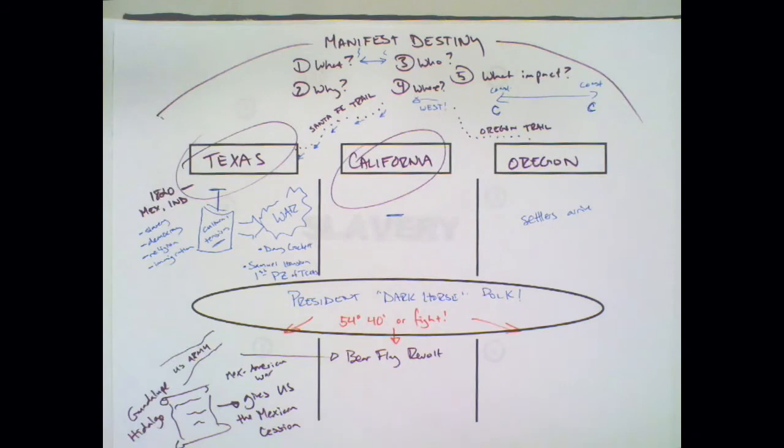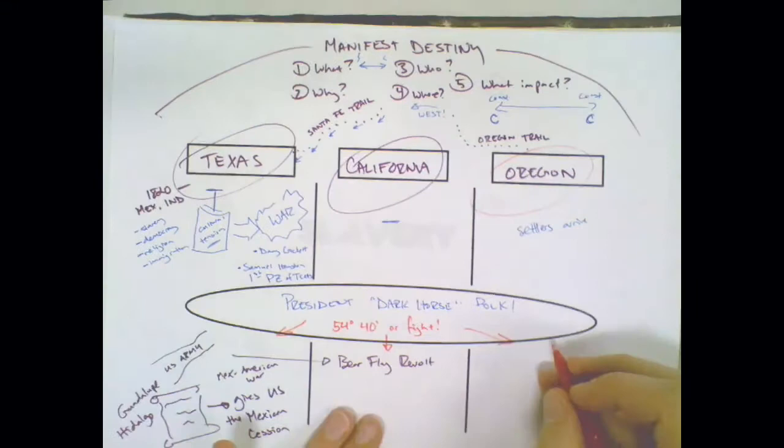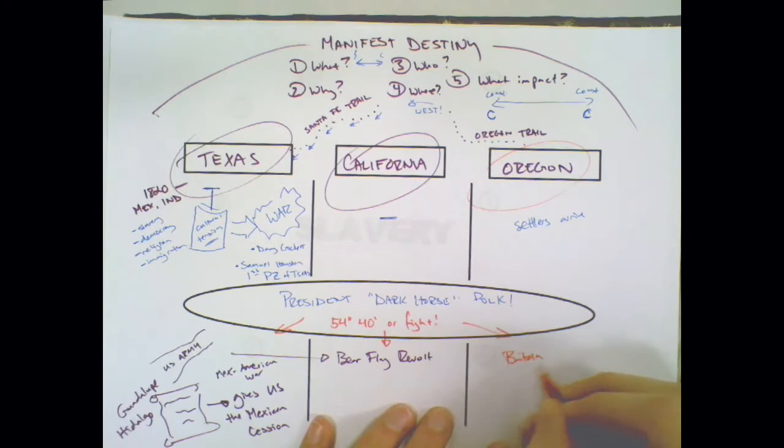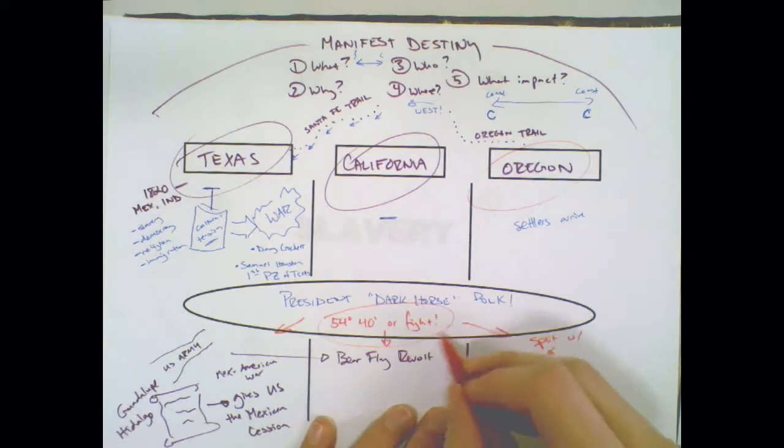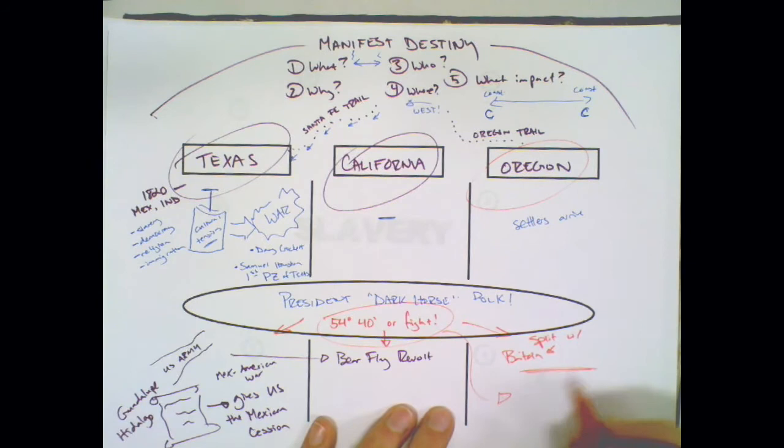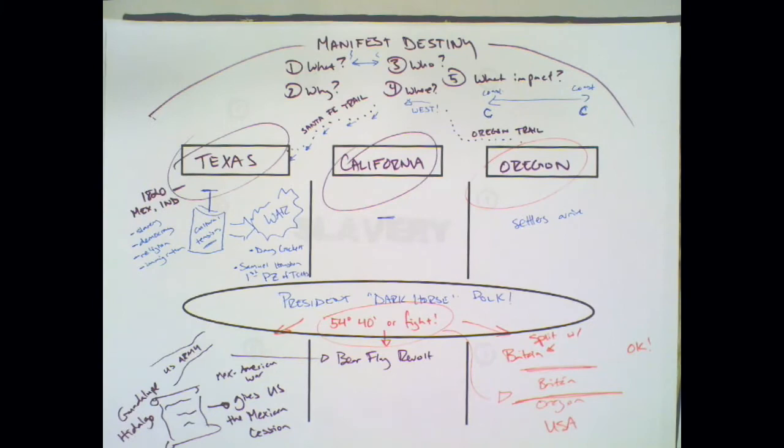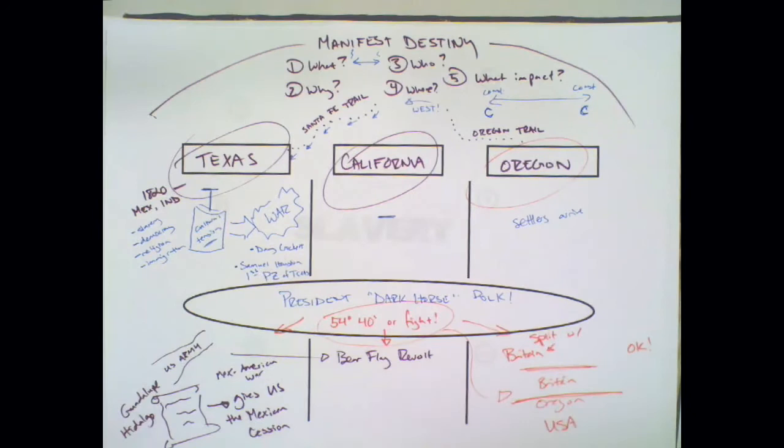Not only does he get Texas and California, he also gains control of Oregon. He does this by negotiating with Britain, because it was split with Britain. He says, give us all of it, 54-40 is the line of latitude. But instead Britain says, why don't we just split it? You take the bottom half, we'll take the top half. And James K. Polk says okay.